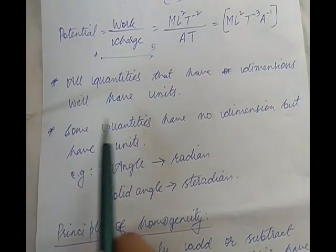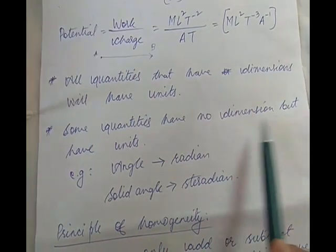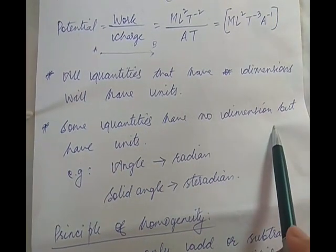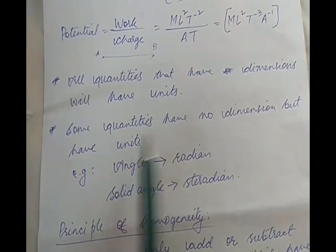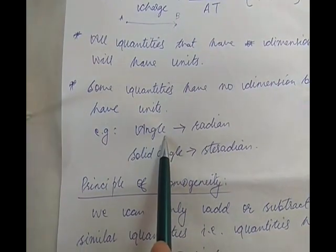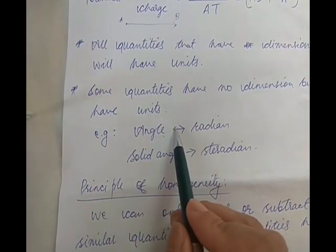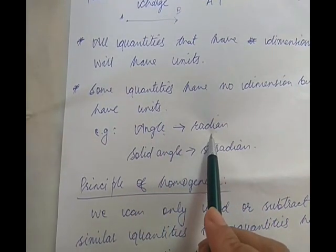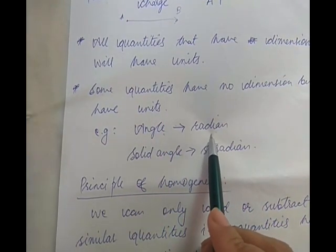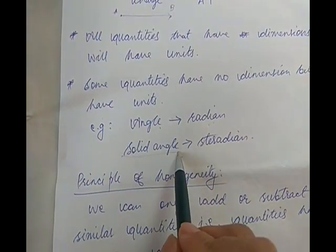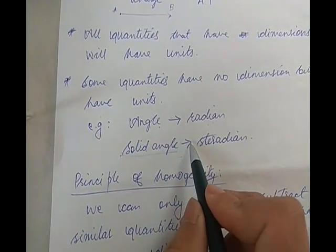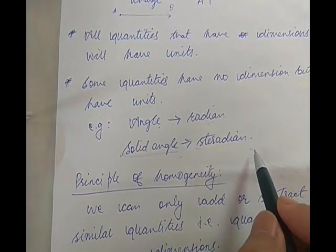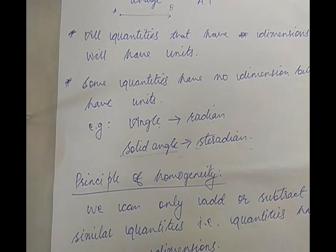There are some quantities which have no dimension but they have units. For example, angle — which is measured in radian — has no dimension. Similarly, solid angle has a unit called steradian, and it is also a dimensionless quantity.